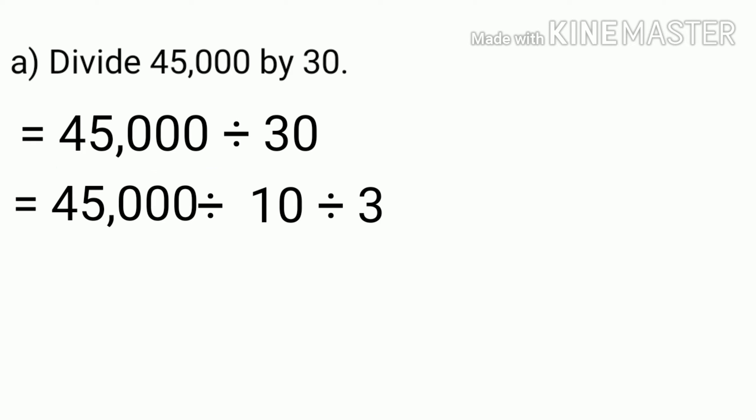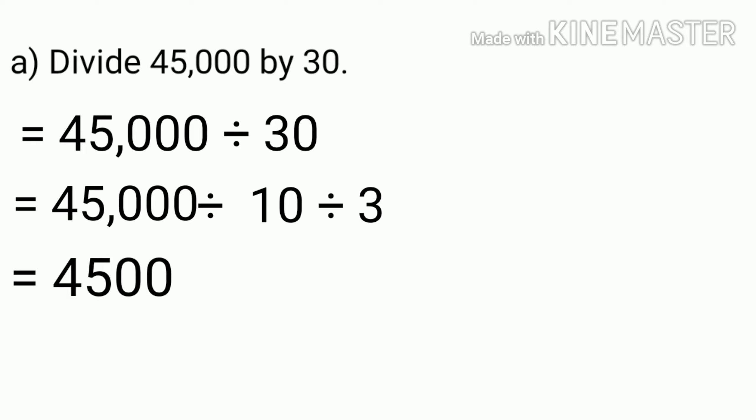Now, in order to find the quotient of 45,000 and 30, we can first divide 45,000 by 10. If our numbers have zeros at the end, we can use the same type of trick that we have used in multiplying by tens, hundreds and thousands. But here, when we are dividing, instead of adding zeros, we will be removing zeros. So, when we divide 45,000 by 10, we can get the quotient by removing one zero from the end of 45,000. After dividing 45,000 by 10, we get 4,500 as the quotient.